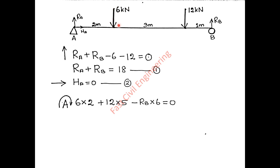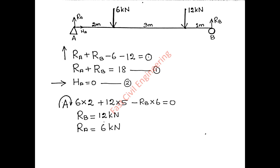Third equilibrium equation: summation of moments about A equals zero, considering clockwise direction as positive. The 6 kN load at 2 meters gives 6 into 2. The 12 kN load at 5 meters gives 12 into 5. RB acts at 6 meters in the anticlockwise direction, so minus RB into 6 equals zero. Therefore RB equals 12 kN, and from Equation 1, RA equals 6 kN.